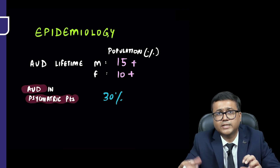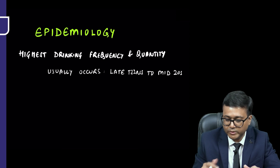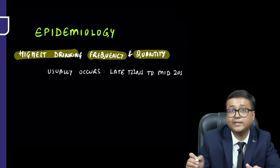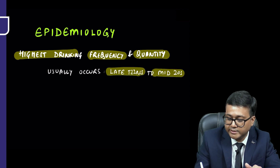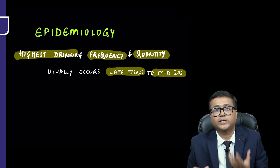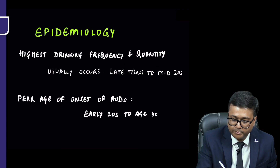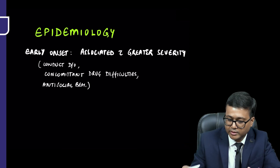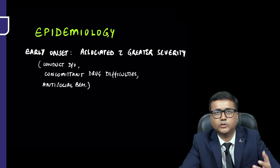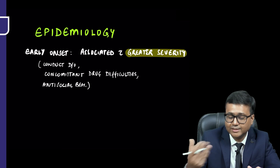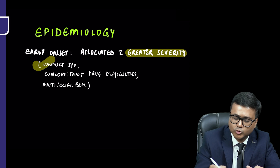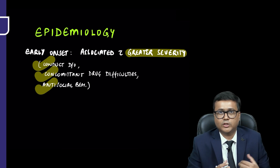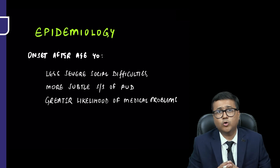Looking at which age group has the highest drinking frequency and quantity, it usually occurs in late teens to mid-20s. The peak age of onset of alcohol use disorder is from the early 20s to age 40. Early onset is associated with greater severity — more problems such as conduct disorder, concomitant drug difficulties, and antisocial behavior.